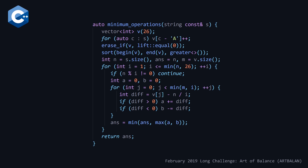Let's look at the solution code. I've skipped the boilerplate of reading T and looping for test cases, and I'm showing the minimum_operations method. We pass in the string by const reference. At the top we declare a vector of integers with 26 elements for character frequencies. We loop through each character in our string, incrementing the corresponding count using character minus capital A — mapping A to index 0, B to index 1, and so on.